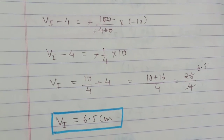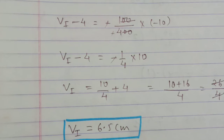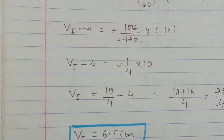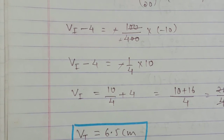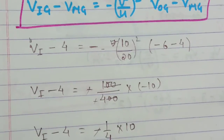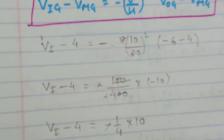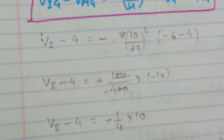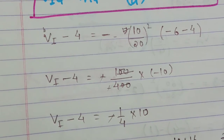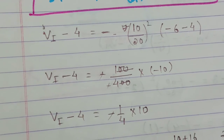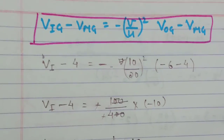This is the value for this condition — object moving along the principal axis. In my next video, we'll talk about the object moving perpendicular to the principal axis. Don't forget to watch the next video to clear your concept. Till then, bye, thank you.